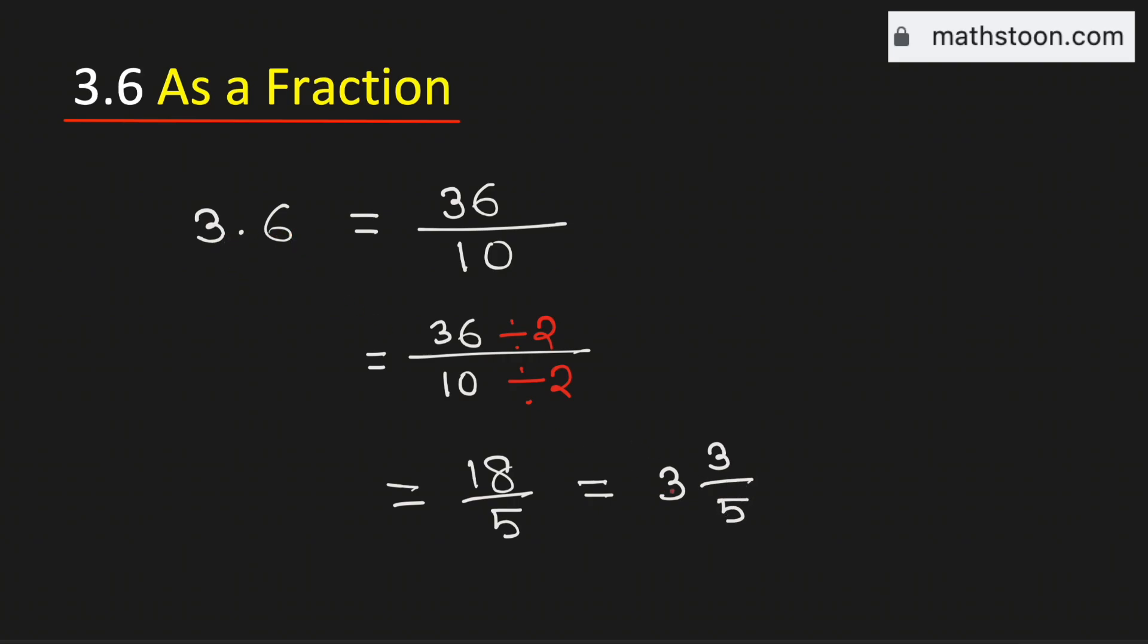Therefore, 3.6 as a mixed number is equal to 3 and 3 fifths. And this is our final answer.